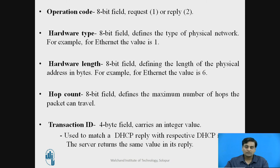The next field is transaction ID. This field is 4 bytes long and carries an integer value. It is used to match a DHCP reply with the respective DHCP request — the server returns the same value in its reply. Since a DHCP client may generate multiple request messages, the transaction ID field is used to identify and match the respective reply to the respective DHCP request.